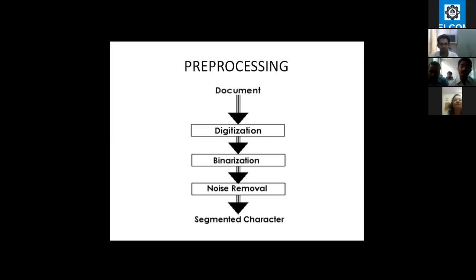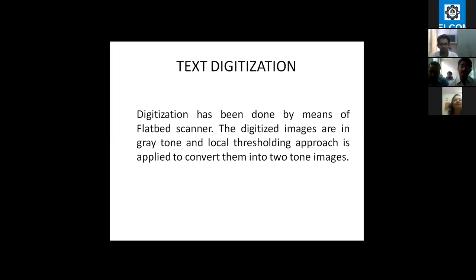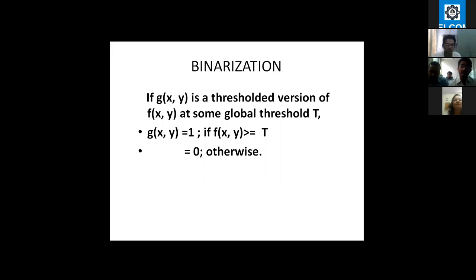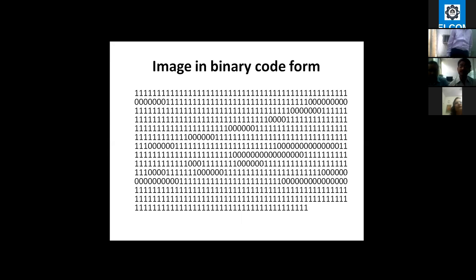Our pre-processing phase contains digitization, binarization, and noise removal, after which we get the segmented character from which we extract the feature species. During digitization, handwritten samples are scanned by a digital scanner and we get a gray level image matrix, where pixel values range from 0 to 255. These gray levels are then converted to a binary image for ease of further processing. An optimized threshold value is chosen, and pixels are classified as binary white or binary black — giving a matrix containing only ones and zeros.